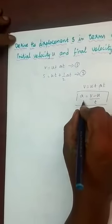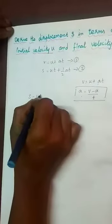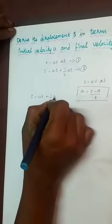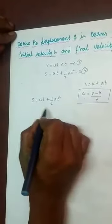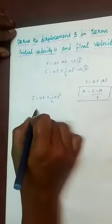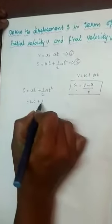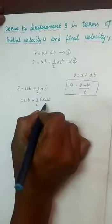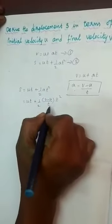So, that A value we are substituting into equation number 2. Equation 2 is S is equal to U T plus half A T squared. Now, substituting: U T plus 1 by 2 into A value, which is V minus U divided by T, into T squared.